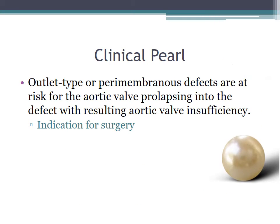A clinical pearl: outlet type or paramembranous defects are at risk for the aortic valve prolapsing into the defect, resulting in aortic valve insufficiency, which is an indication for surgery. If a patient has a holosystolic murmur and the VSD is near the aortic valve, and they develop a new diastolic murmur, this could represent the aortic valve prolapsing into the defect — refer for cardiac intervention.